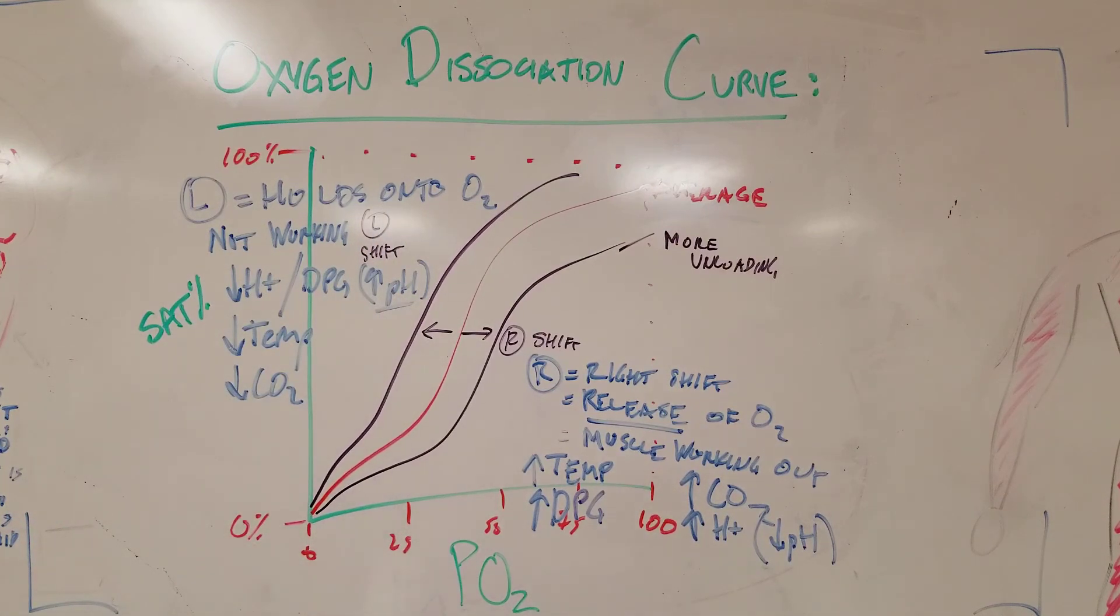That's the oxygen dissociation curve. You're comparing what's going to happen to the saturation of heme particles at certain partial pressures of oxygen depending on the environment that is being caused by the body. Release of O2 because the muscle is working out. Needs it. All right. Thank you.